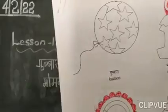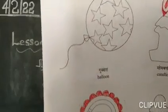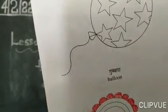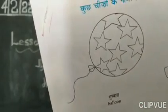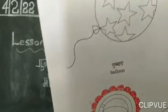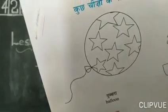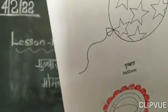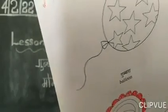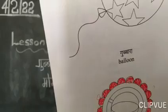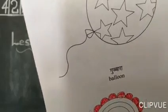Can you see this picture? The first one is Gubara. Gubara — this picture is a balloon. It is a colorful balloon. We will study a balloon.